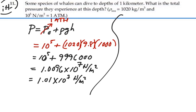Alright, in terms of atmospheres, I know that there is 1 atmosphere per 10 to the 5 newtons per meter squared. So this is approximately 101 atmospheres.